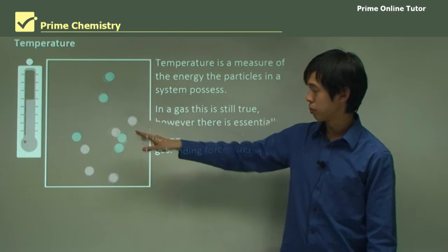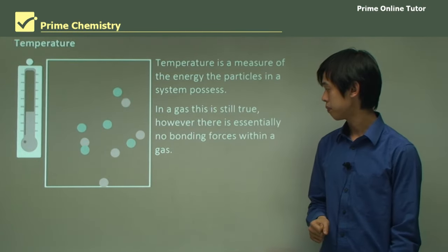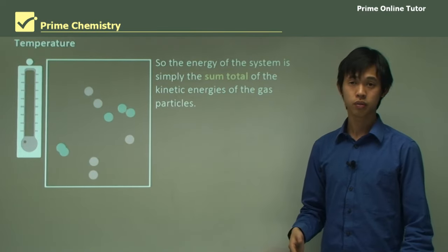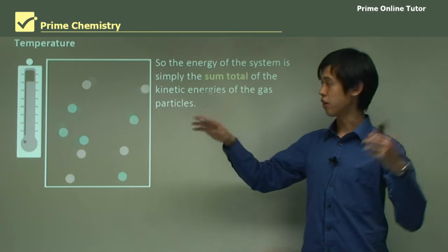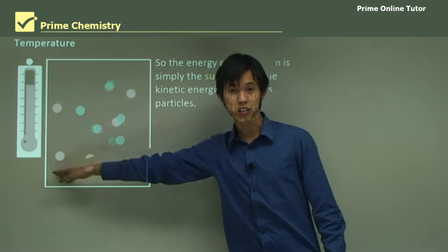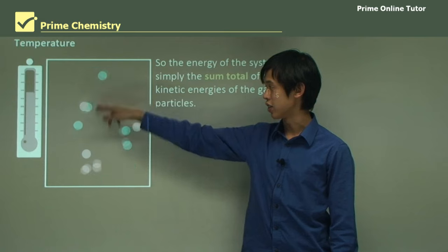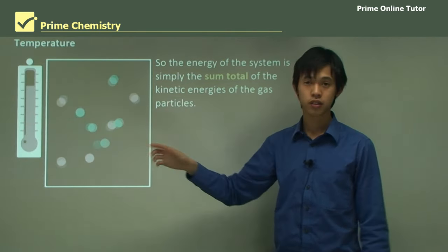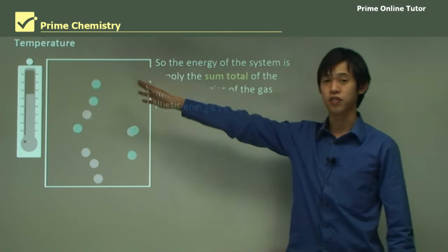Between these blue and pink particles, there's practically no forces holding them together. The energy of the system is simply the sum total of the kinetic energies of the gas particles. The total energy of this box would be the addition of each of the kinetic energies of these molecules — we add them all together and that gives us the total kinetic energy of that box.